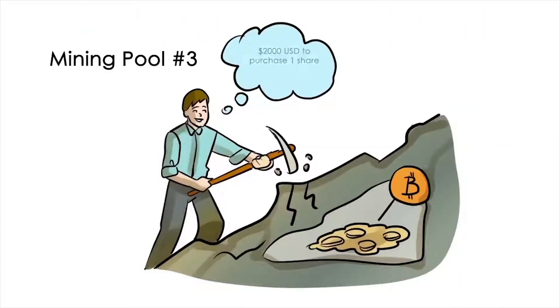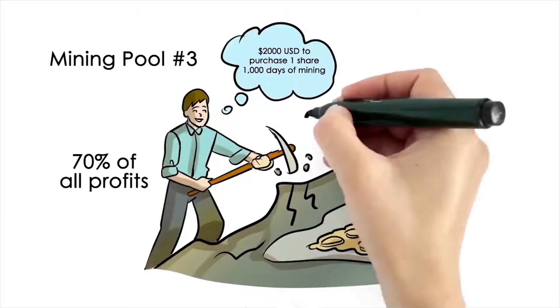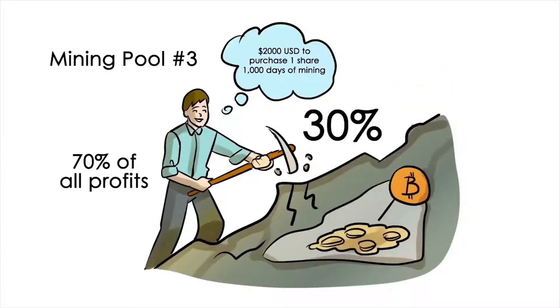Mining pool number three: $2,000 US dollars to purchase one share that pays you for 1,000 days of mining. 70% of all profits will be paid to you on a daily basis, and another 30% will be used to help you purchase additional shares in this mine.